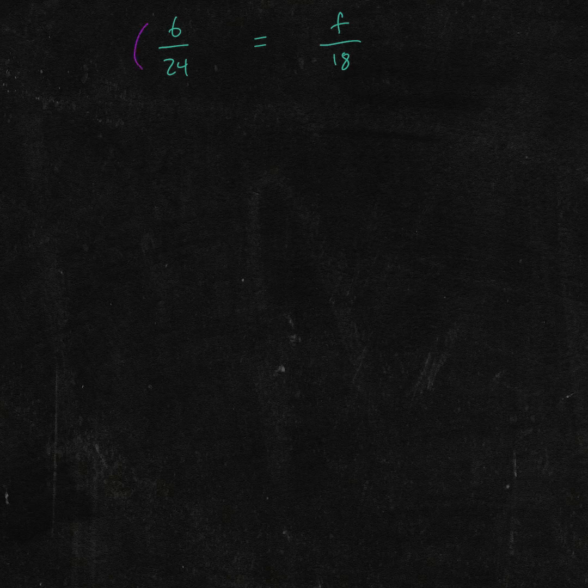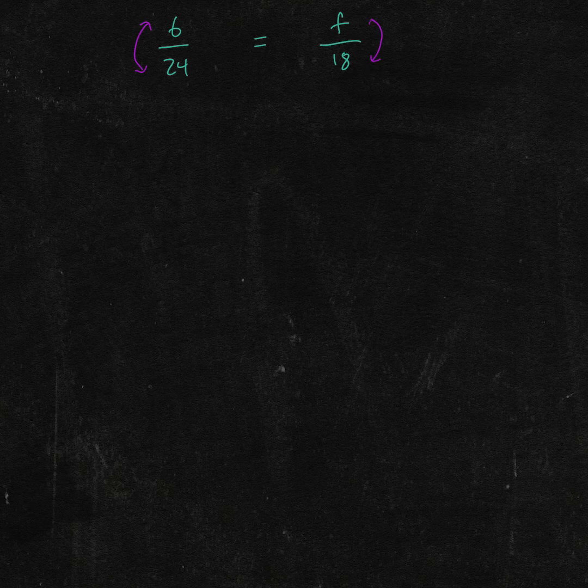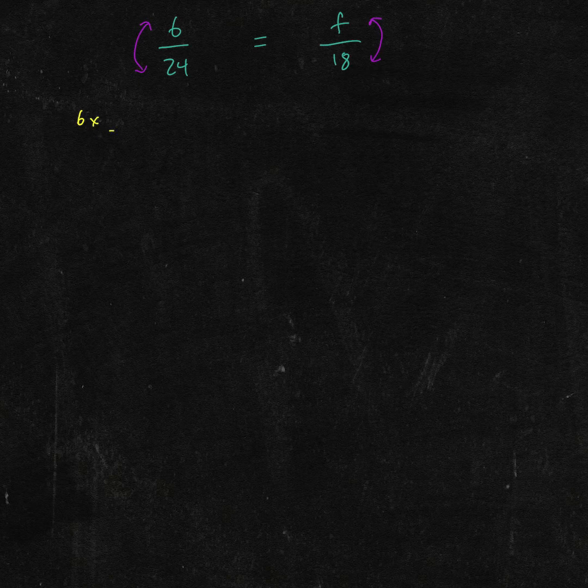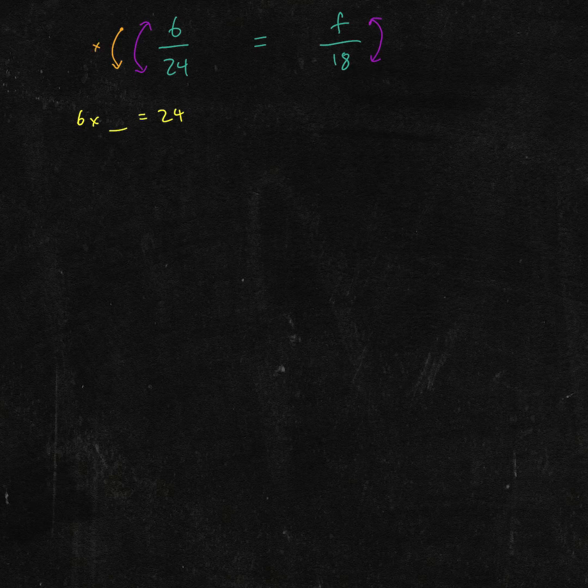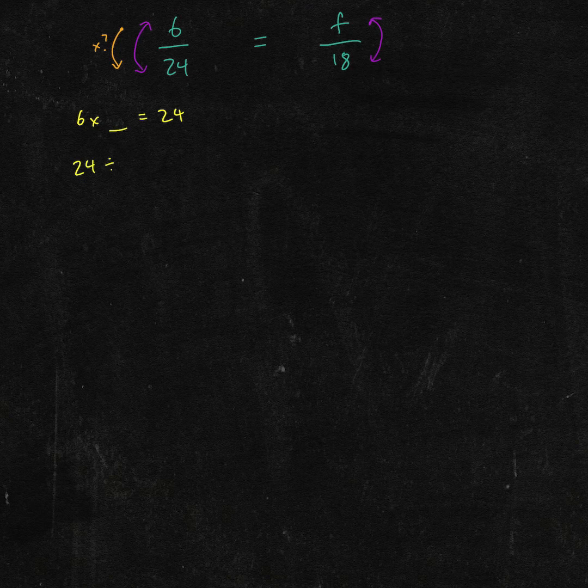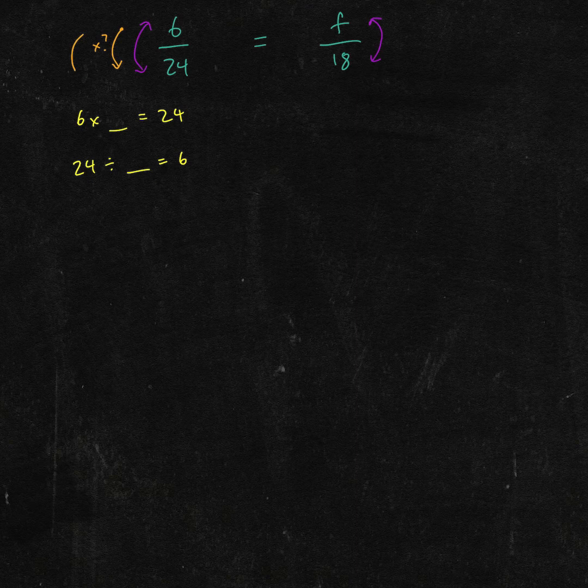is to compare the top numbers, the numerators, with the bottom numbers, the denominators. Now, we can do this by asking 6 times what equals 24. To go from here to here, what are we timed by? Or 24 divided by what equals 6. So going the other way.